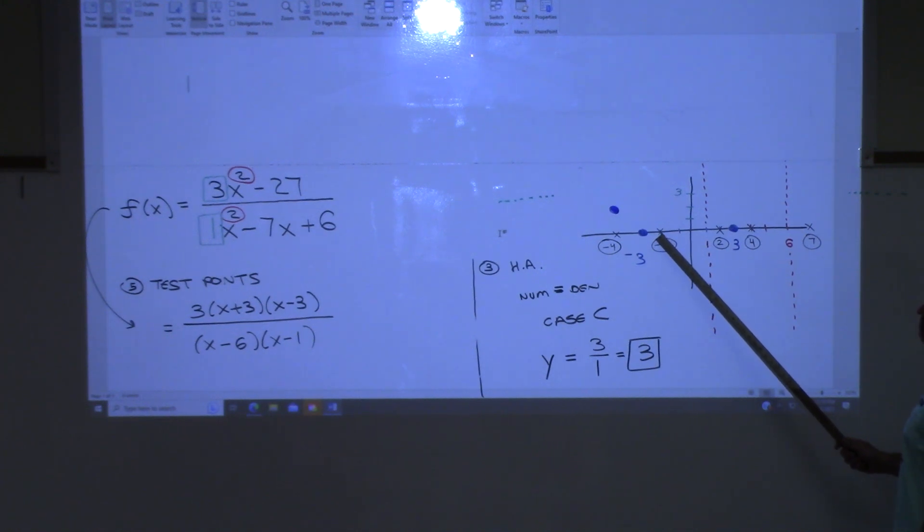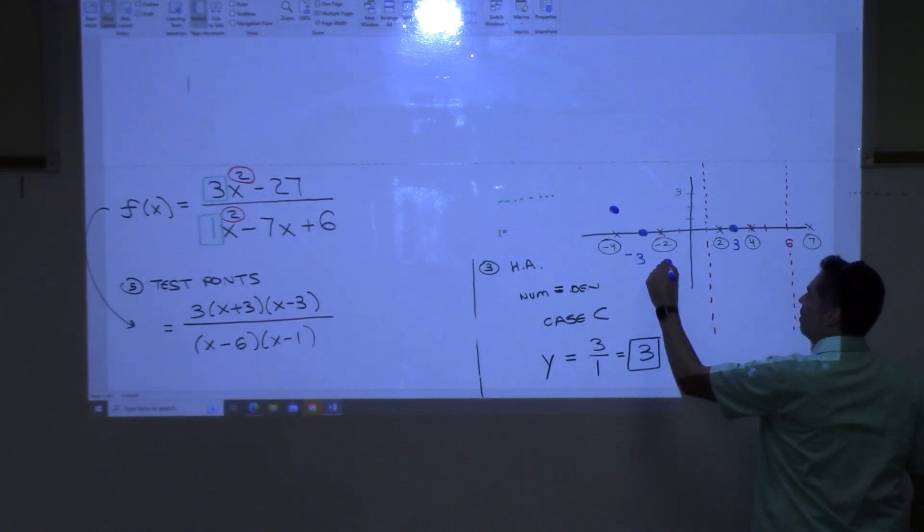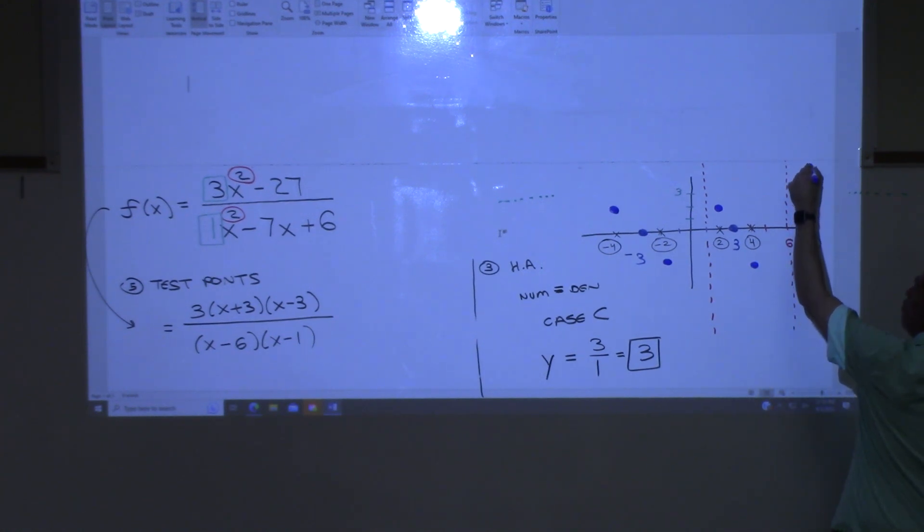Okay, negative two. If you plug that in, you'll get a negative. So I'm going to put a dot here. If you plug in two, you get a positive. If you plug in four, you get a negative, and if you plug in seven, you get a positive. I'm going to put the positive way up here on this one, just because I felt like it.